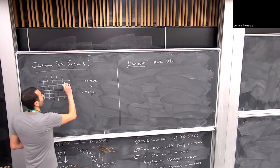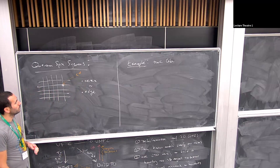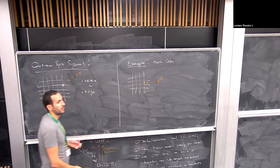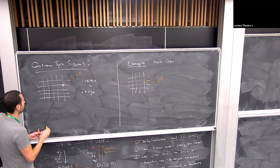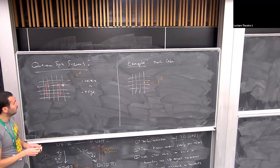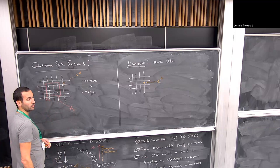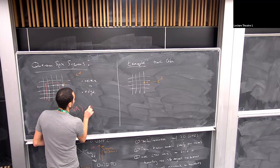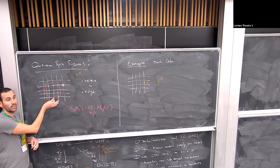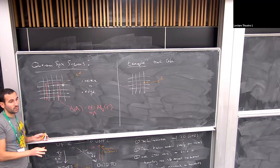To each rectangle lambda, we get the local algebra A(lambda). For a quantum spin system, it's just the tensor product over the sites in lambda of M_d(C). For Toric code, it's a tensor product of C² at each site. A rectangle is a simply-connected bounded contractible patch — you need to know which vertices are inside and which are outside.